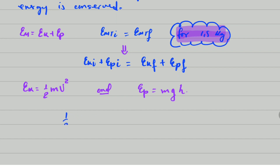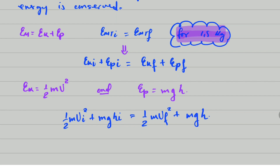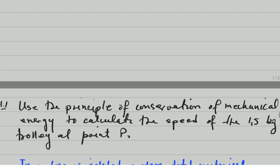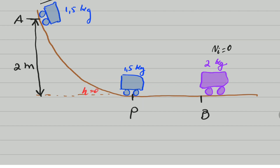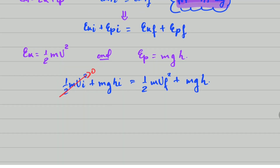So we have: half times mass times initial speed squared plus mass times g times initial height equals half times mass times final speed squared plus mass times g times final height. The trolley starts from rest so initial speed is zero, and at ground level the final height is zero. Both of those terms cancel out.